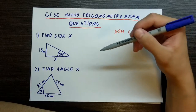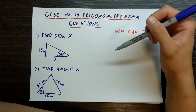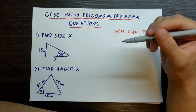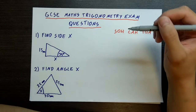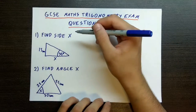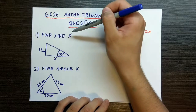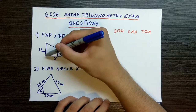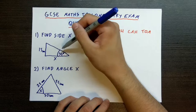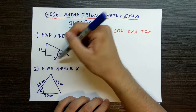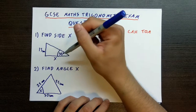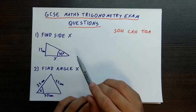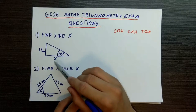Today we will be looking at some questions that often pop up during exams and that we need to learn essentially. So without further ado, let's get started. Here we have the first question. We need to find side x. We are given one of the sides of the triangle, we are given an angle of a triangle, and we need to find this side right here.